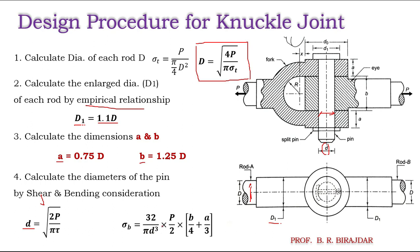We also check the bending stress using the equation: sigma b = (32/π·d³) × (P/2) × (b/4 + a/3). From this equation we can find the diameter d by bending. We then obtain two values of d — one from shear and one from bending.